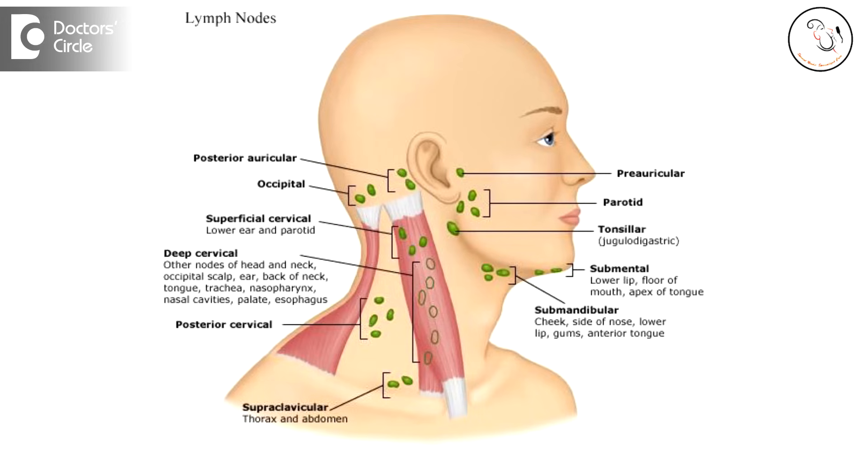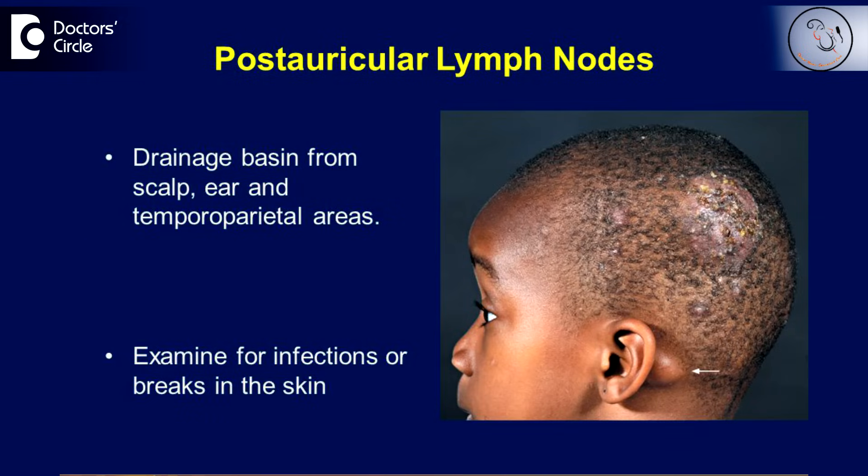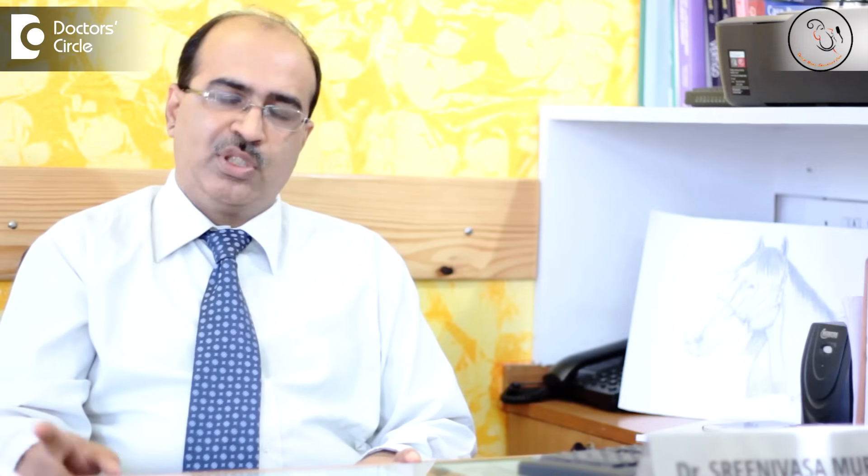The most common causes of post-auricular lymph node swelling are a viral infection or skin infection of the scalp. Somebody might have scratched their hair because of itching and it may have become secondarily infected. Sometimes you can also have an ear lobe infection secondary to ear lobe piercing, and then you have a node there. Swelling in that area can also be secondary to infection in the ear canal, called otitis externa, which can lead to infection of the lymph node behind the ear.